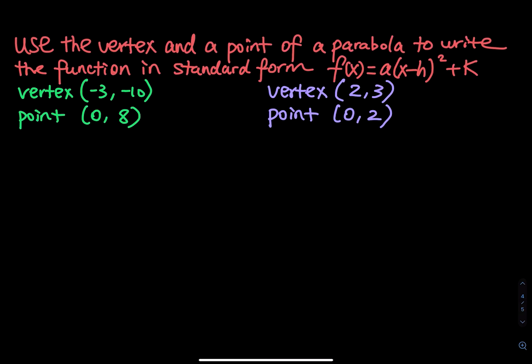This time I give you the vertex and a point of a parabola. I would like you to write the parabola in standard form. The standard form is f of x equals to a times x minus h square plus k.